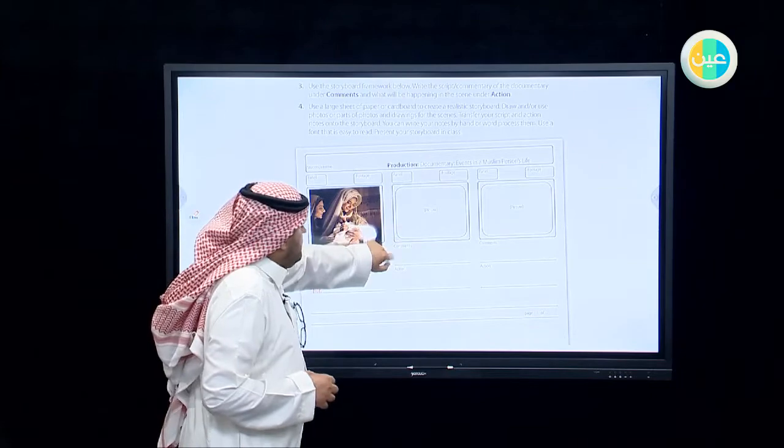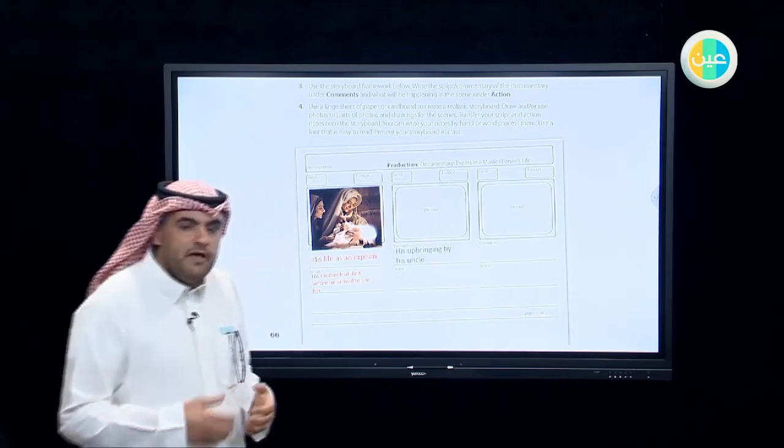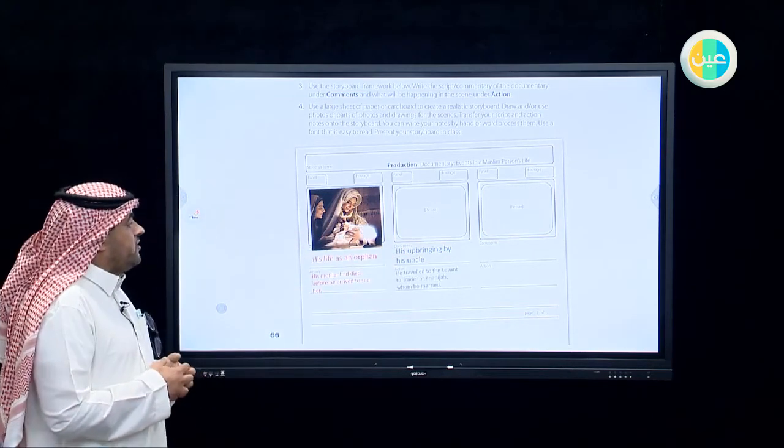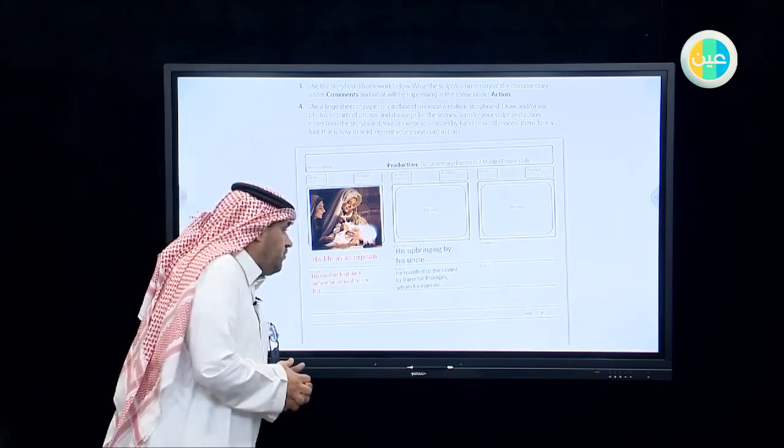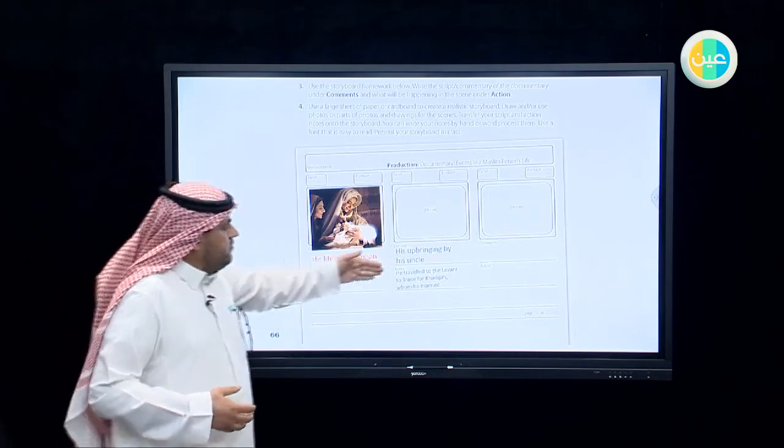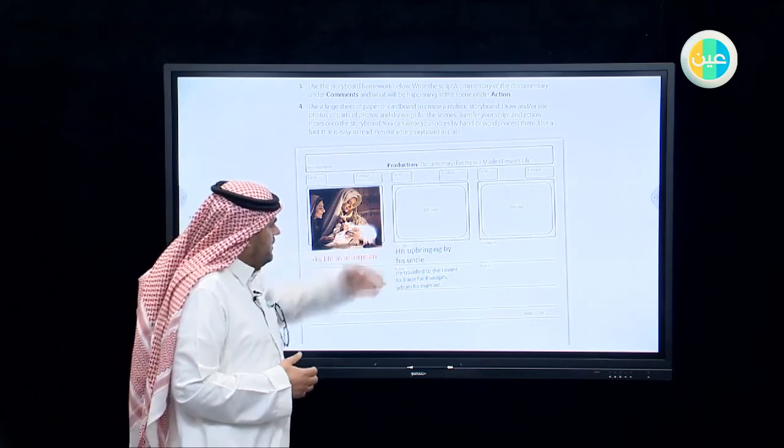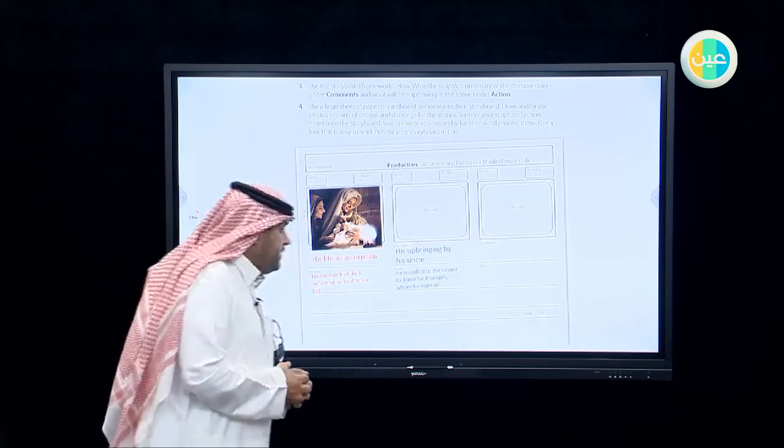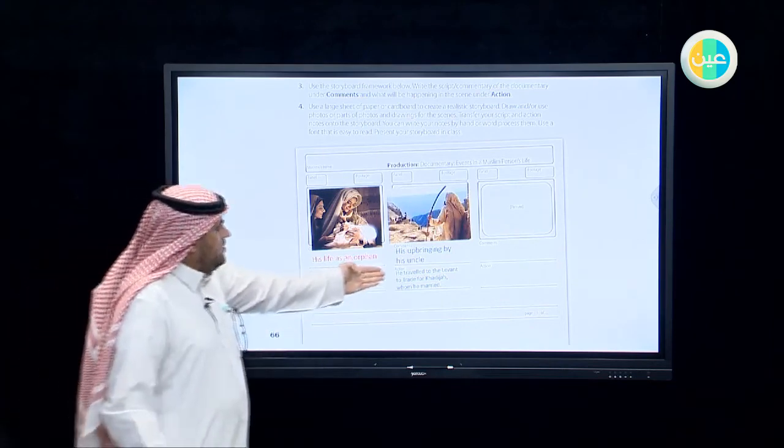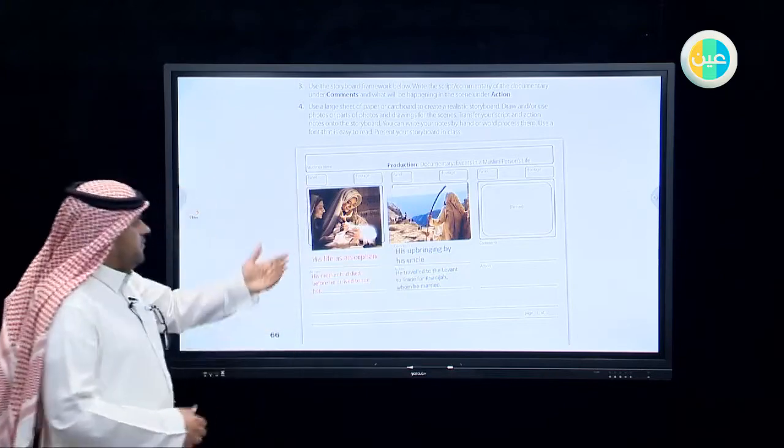Next one, comment: The second event, his upbringing by his uncle when his uncle Abu Talib brought him. What happened, what is the most important action that happened at this time? Yes, he travelled to the Levant to trade for Khadija whom he married. What is Levant? Levant is Montiqat al-Sham, the Sham area. So Prophet Muhammad, peace be upon him, travelled to Levant to trade for Khadija at this time when his uncle was abroad bringing him. So let's provide it with a picture.